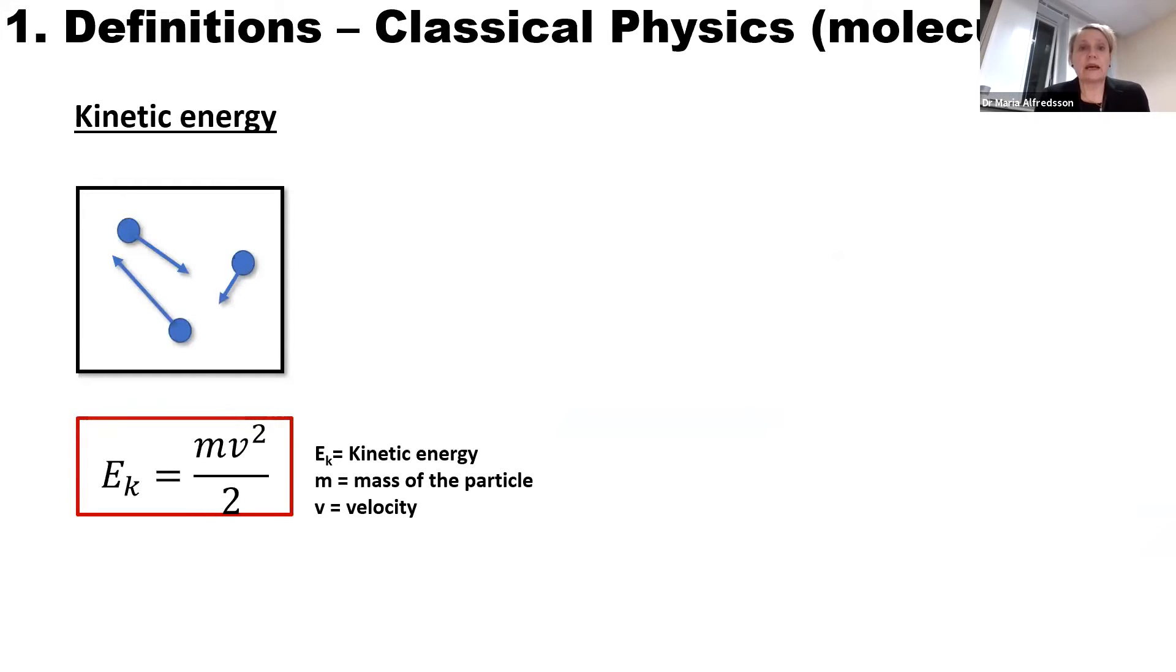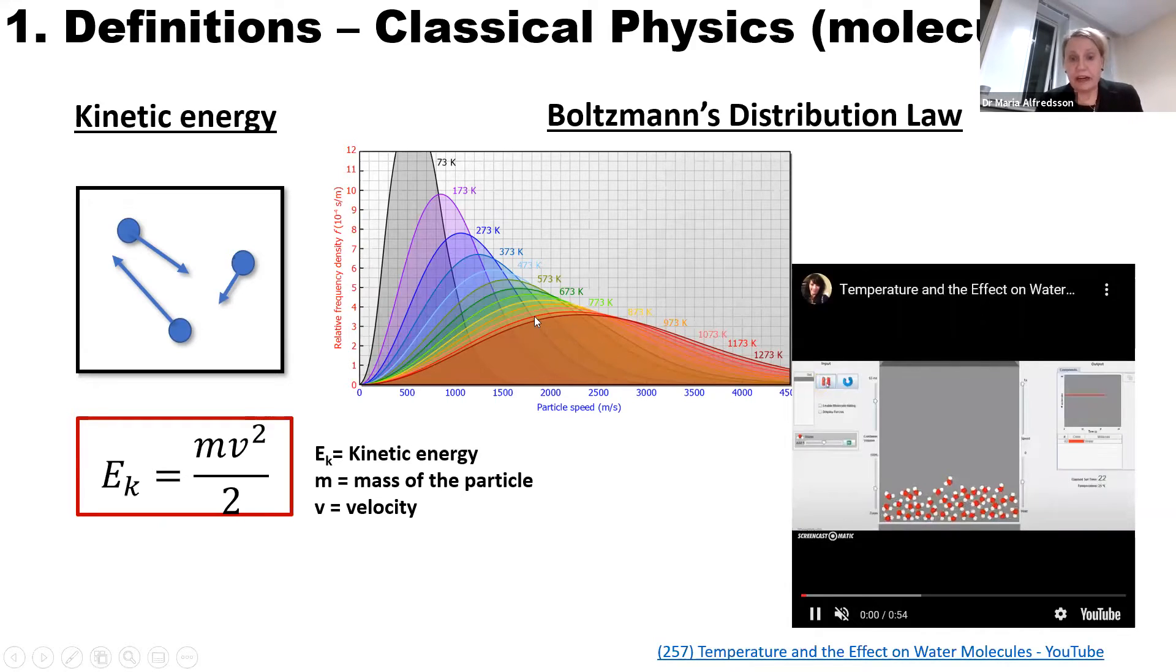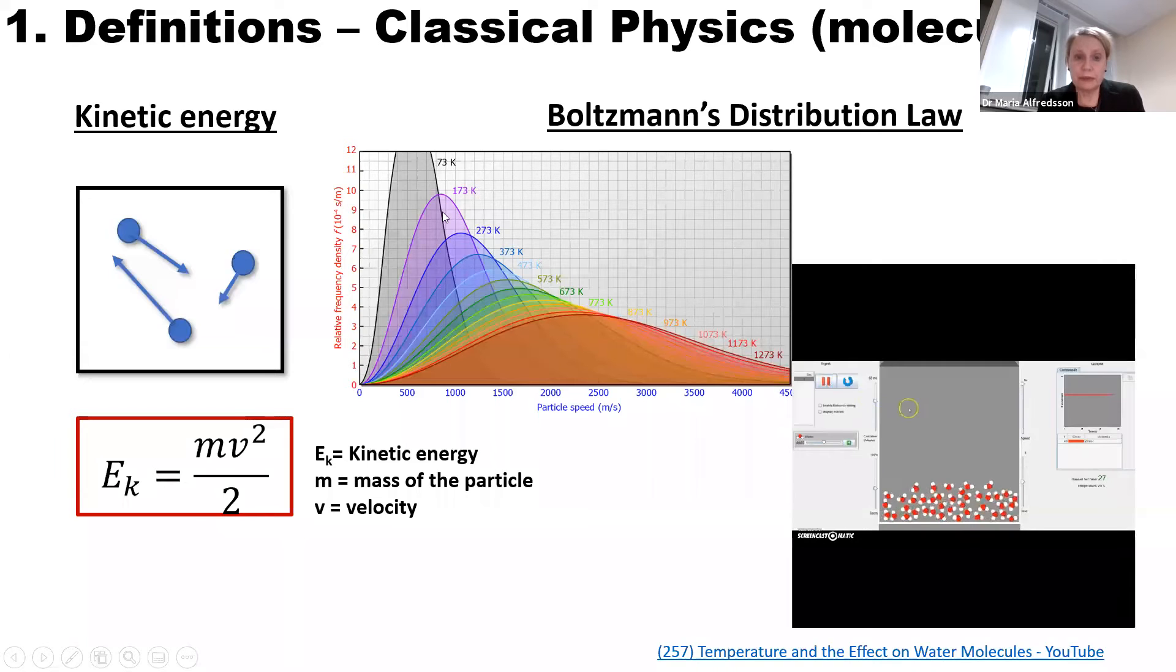If we start by looking at a molecule, a molecule will have kinetic energy defined by the mass of the particle and the speed of the particle squared divided by two. We also know that this kinetic energy depends on the temperature and it can take any value you want. If you have a low temperature, you have a rather small distribution, but it can take any energy within this distribution.